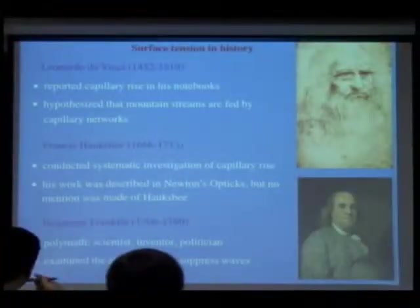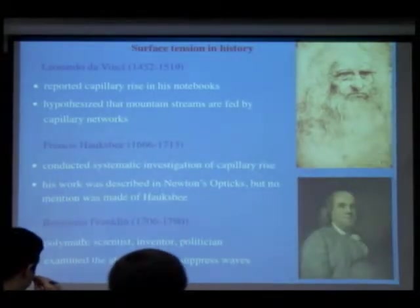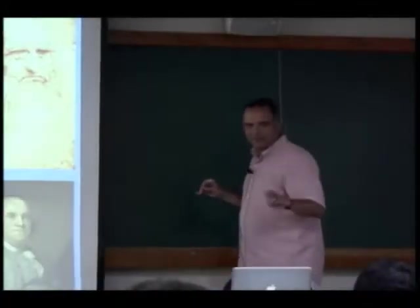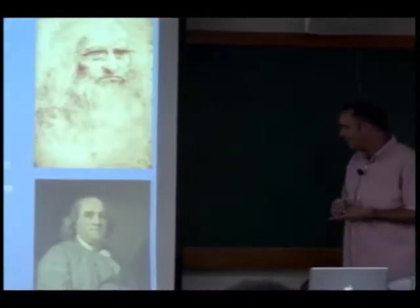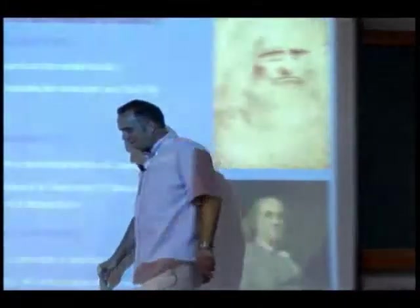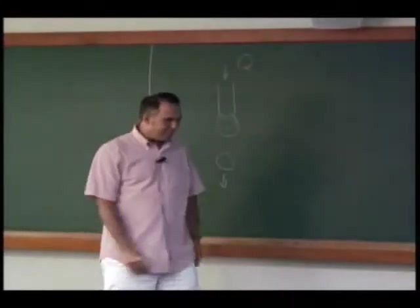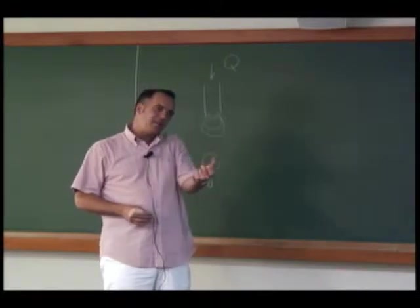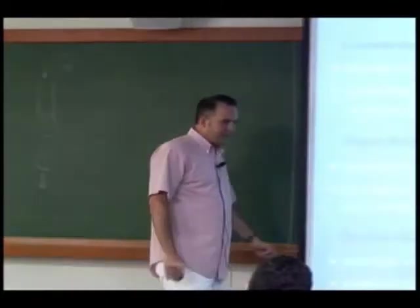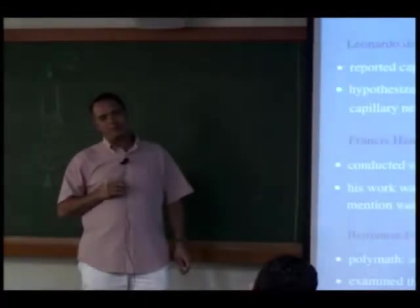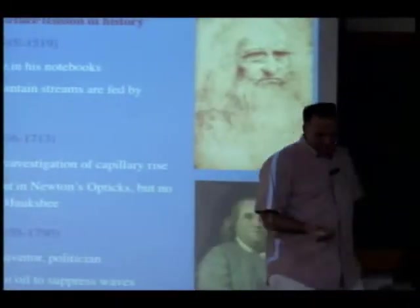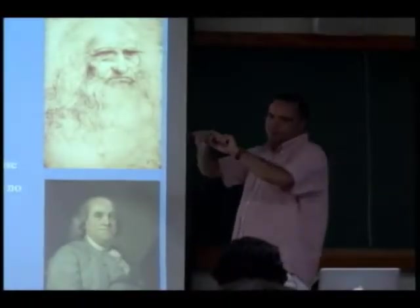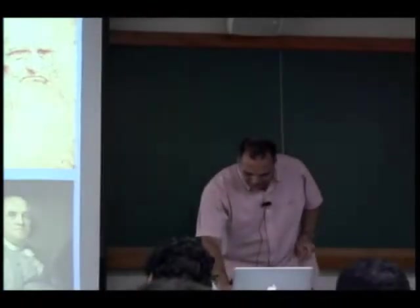Benjamin Franklin, an American polymath and politician, noticed when traveling in Bermuda that spear fishermen would throw oil on the water to flatten the surface, suppress waves, and make it easier to hit targets. He did an experiment looking at how far a teaspoon of oil would spread on a pond. If he'd asked the right question, he could have determined the size of the molecule — because oil on water spreads out to one molecule thick, so you can calculate molecular size from the area and the initial volume.